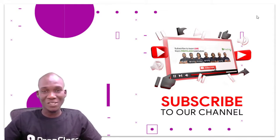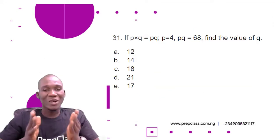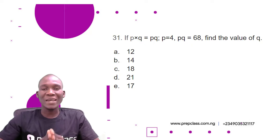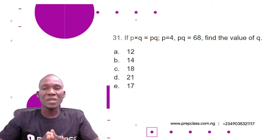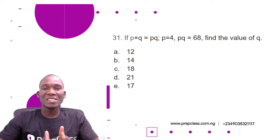Let's start with question number 31. If p multiplied by q equals pq, and p equals 4 and pq equals 68, find the value of q. The options are: A) 12, B) 14, C) 18, D) 21, and E) 17.